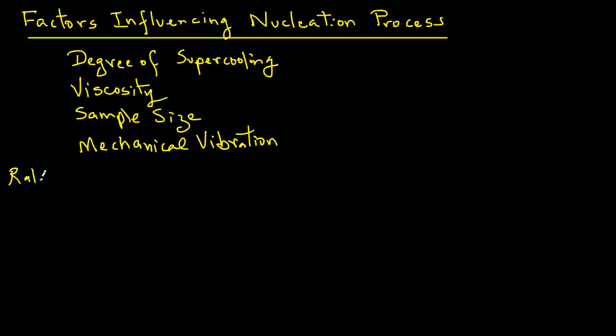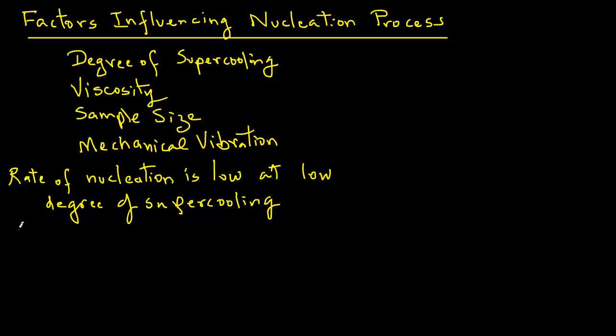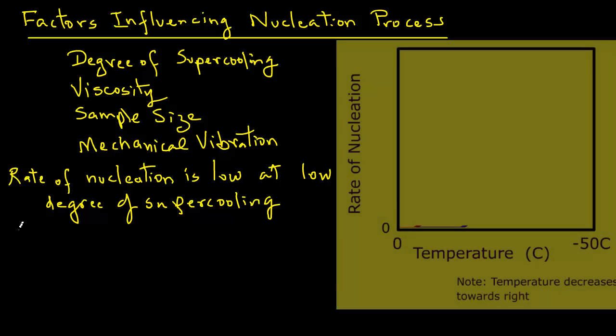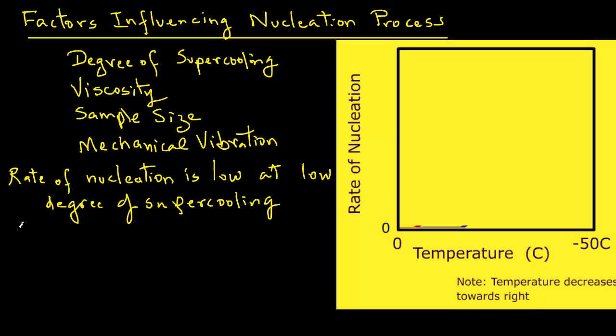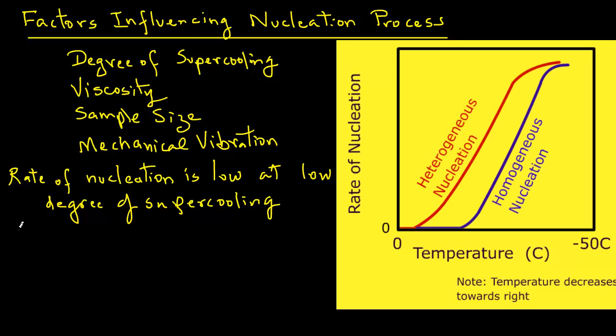The rate of nucleation remains very low at low degrees of supercooling. But below some critical value, lowering of temperature increases the rate of nucleation. We will see that in this figure where we have rate of nucleation on the y-axis and temperature on the x-axis. Note that the temperature decreases towards the right-hand side, going from 0 to minus 50 degrees C.